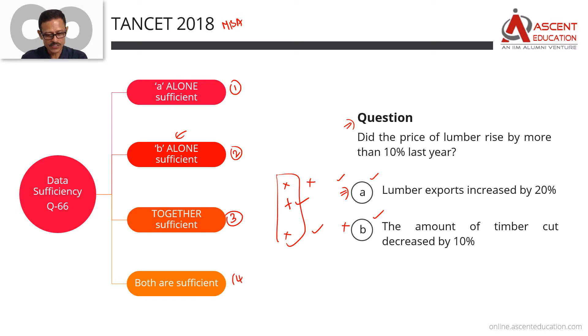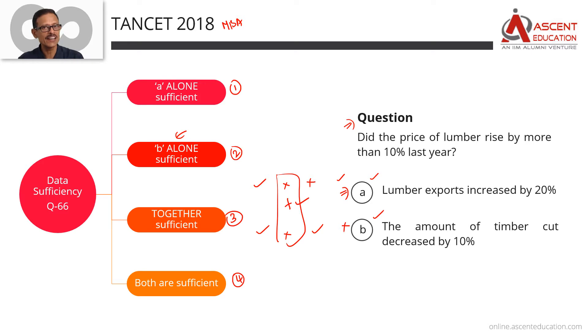Option 4 — if both statements are independently sufficient, meaning A alone is sufficient and B alone is also sufficient.